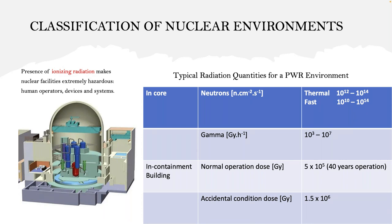Showing here the typical radiation quantities for a pressurized water reactor environment: the in-core area inside the reactor itself has neutron flux levels for thermal neutrons in the range of 10^12 to 10^14, fast neutrons in the range of 10^10 to 10^14, and gamma dose normally in the range of 10^3 to 10^7. That makes the environment very hostile, such that conventional electric sensors can be quickly disabled in that kind of environment.